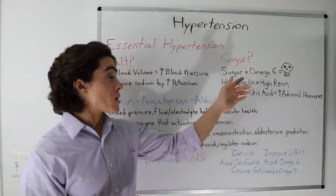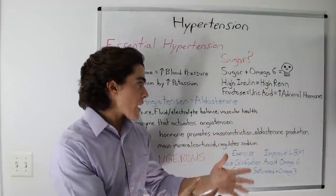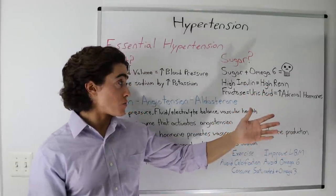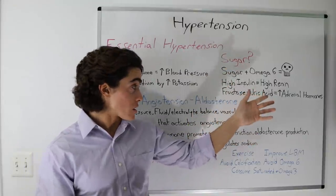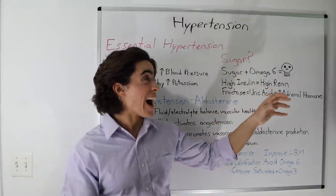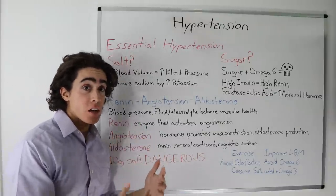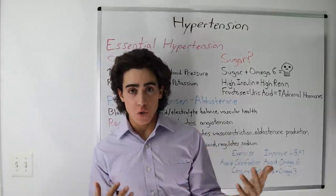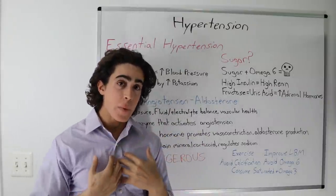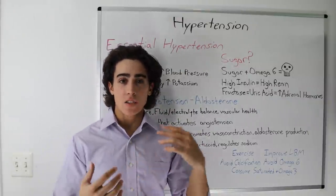The sugar plays in by causing high insulin. So you have a poor diet that's inflammatory, omega-6 seed oils, processed foods, you end up with high insulin. High insulin causes high renin. High renin results in high angiotensin, results in increased vasoconstriction, the blood vessels tighten up, the body is signaled to release aldosterone.